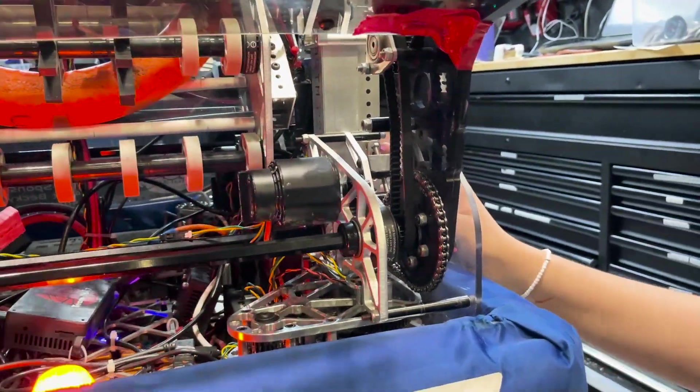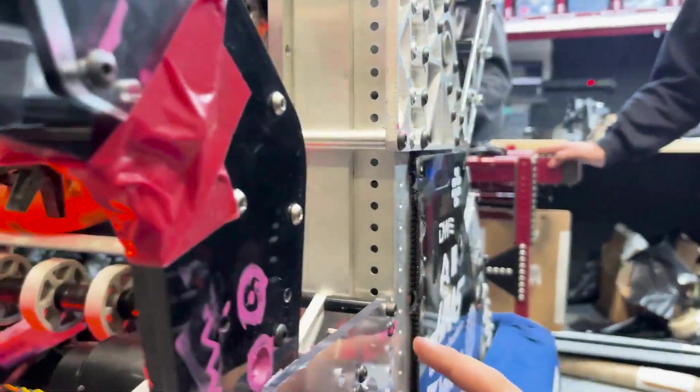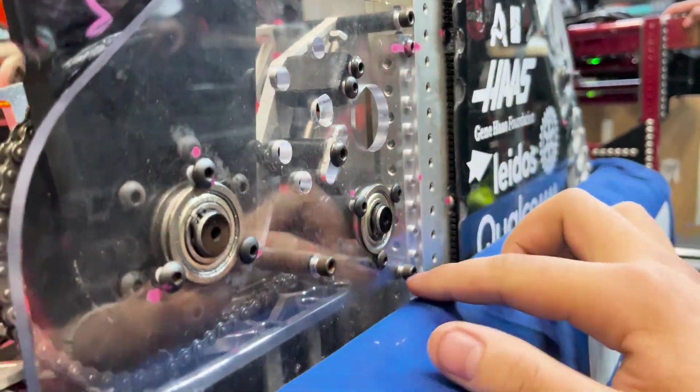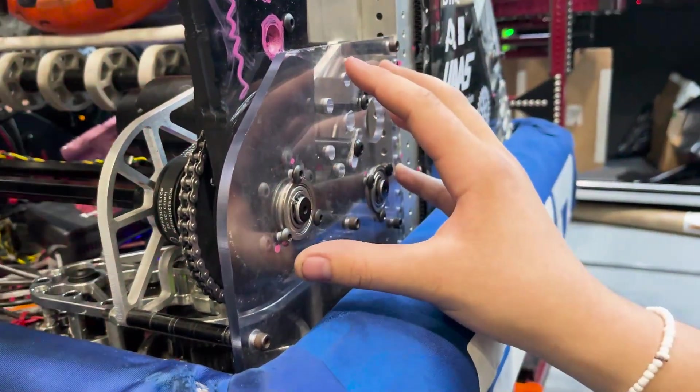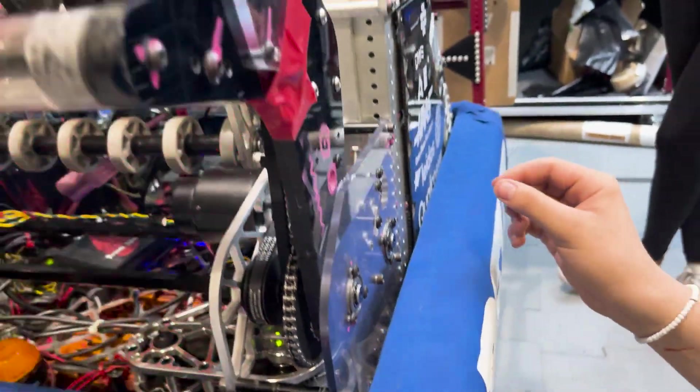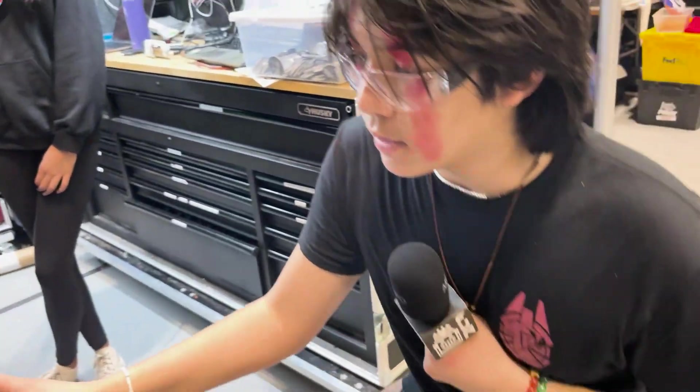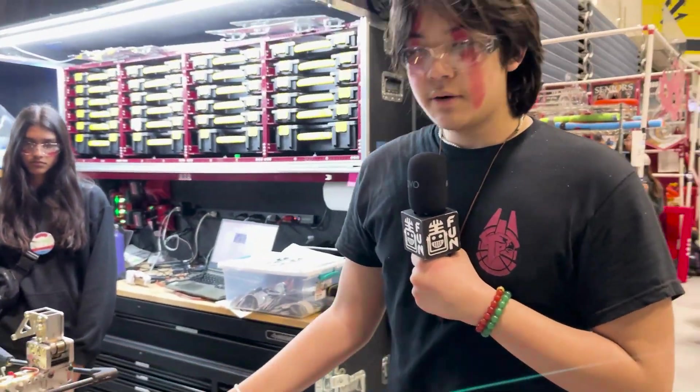After that, it's also very hot swappable. It's basically only held in by a max amount of like five bolts on each side. So if we need to hot swap the intake, which we have a complete spare of, we can just take off the five bolts on each side, unwire it, and then hot swap it really easily.